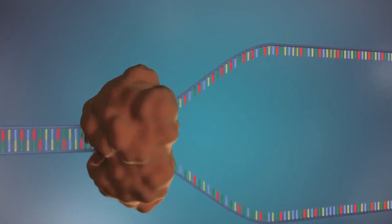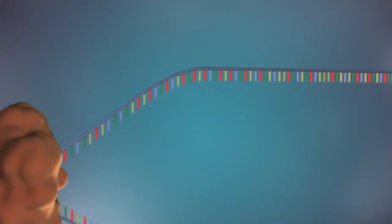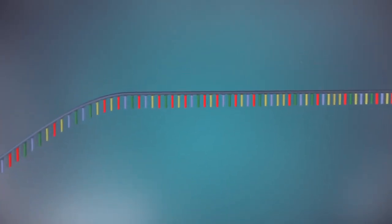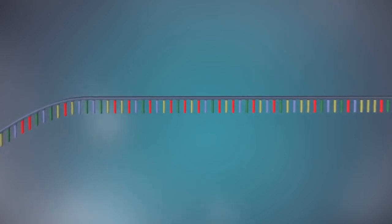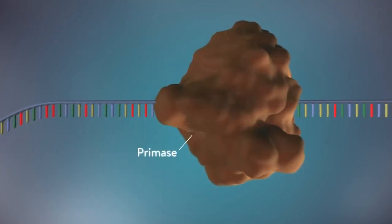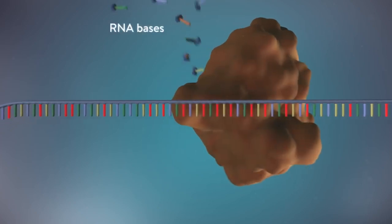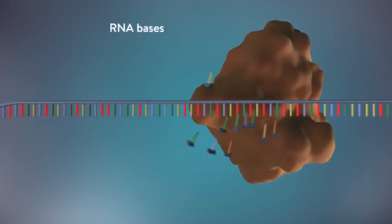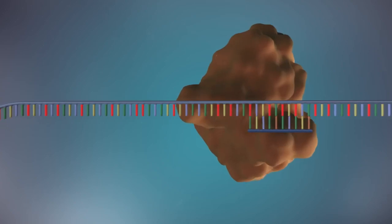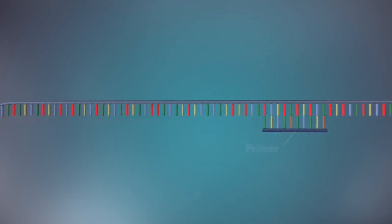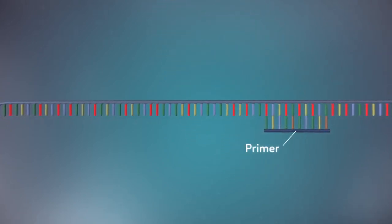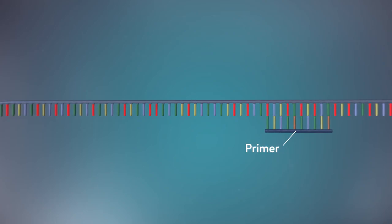The separated strands each provide a template for creating a new strand of DNA. An enzyme called primase starts the process. This enzyme makes a small piece of RNA called a primer. This marks the starting point for the construction of the new strand of DNA.